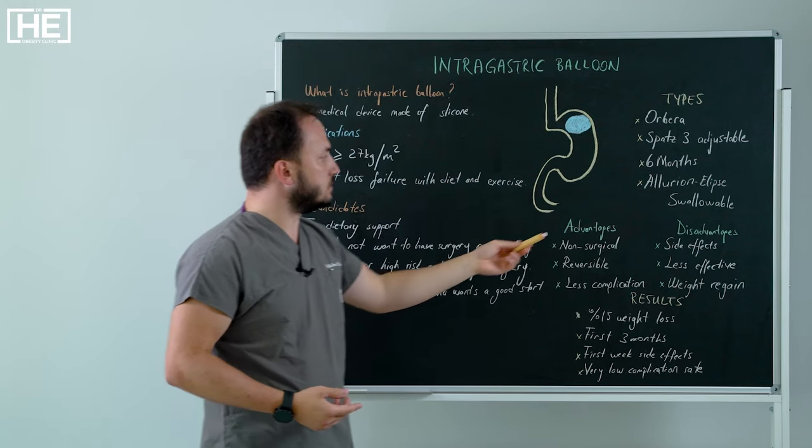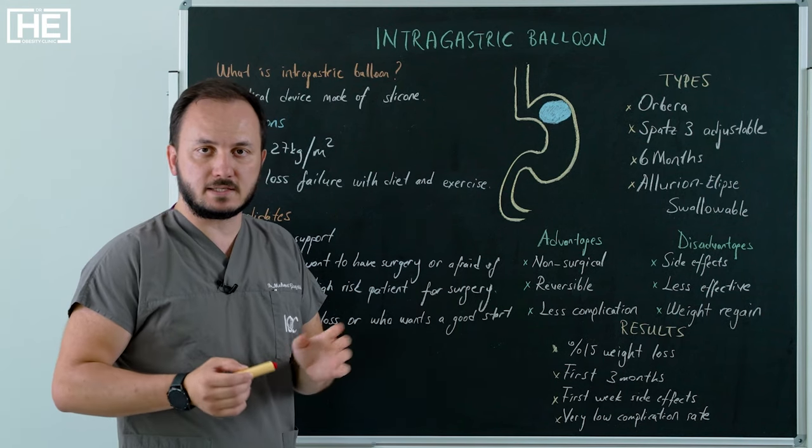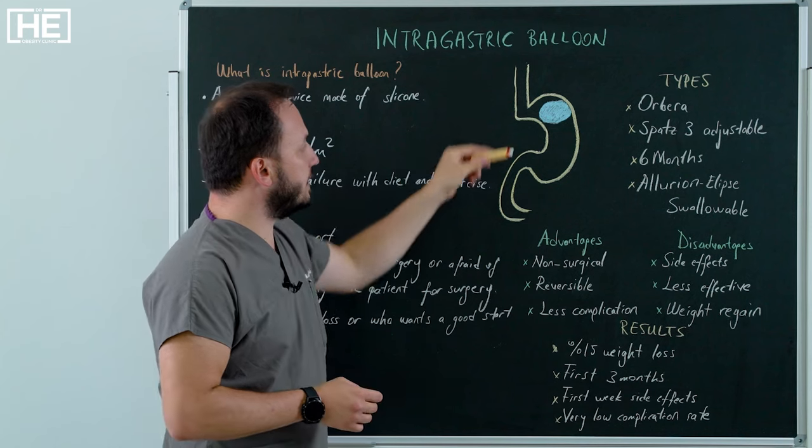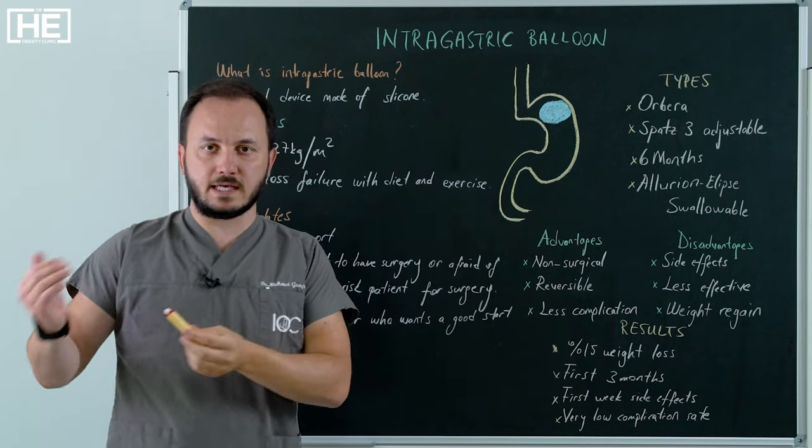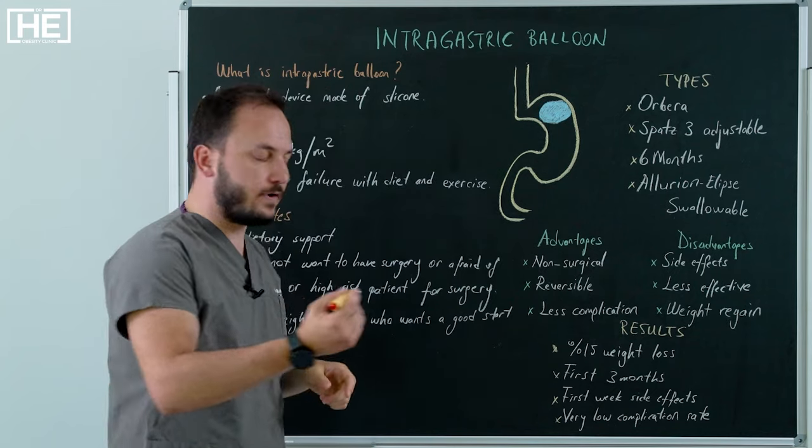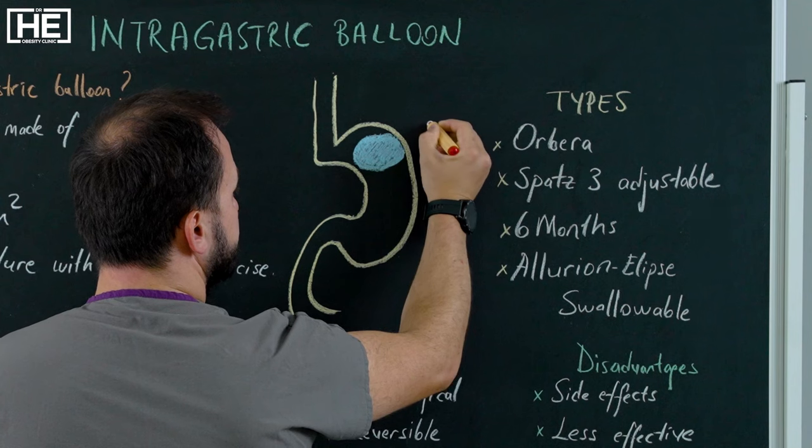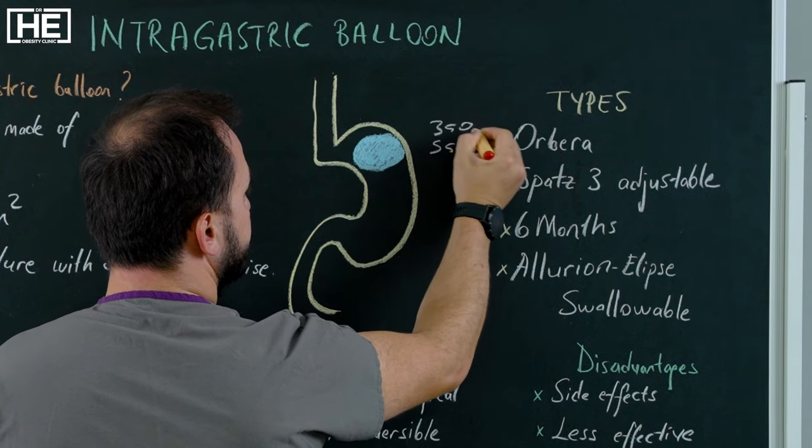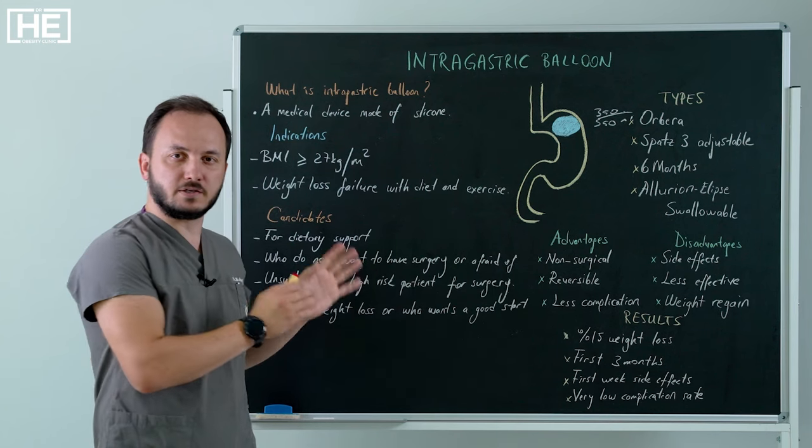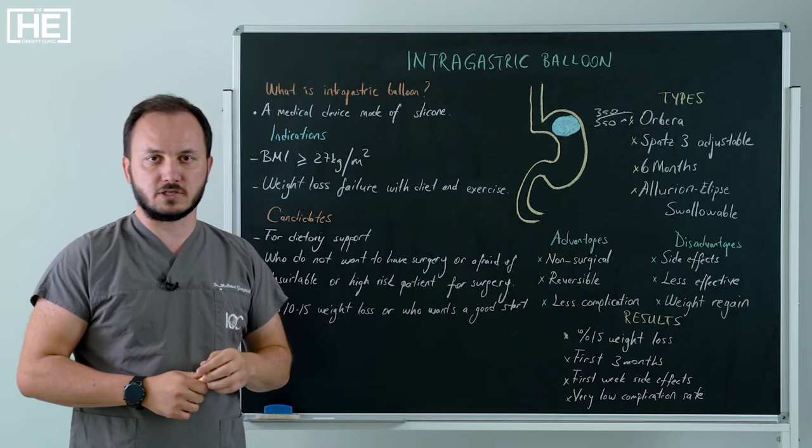But the other balloon, Allurion Ellipse Swallowable Balloon, we don't do endoscopy or anesthesia. The patients swallow with the water and then after being sure with the x-ray that the correct position, we make it 550 milliliters. But it starts from 350. With the Allurion Balloon, this is the only 550. But other balloons, we see it, we give the decisions during procedure.